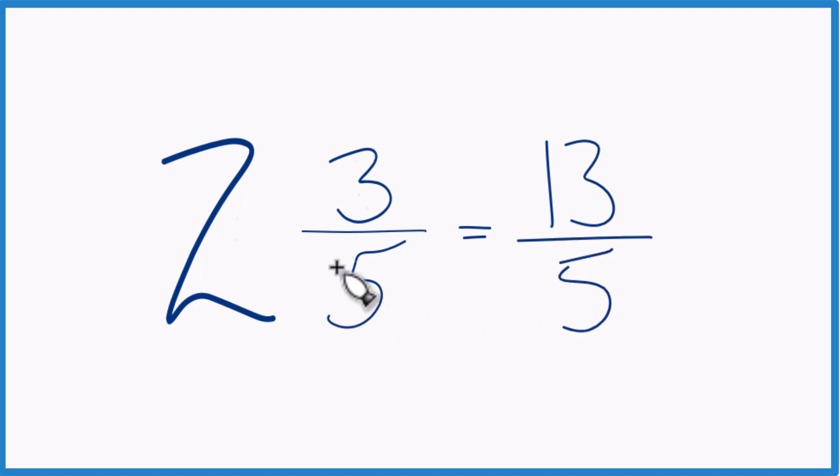So 2 and 3 fifths, the mixed number, equals the improper fraction 13 fifths. We say it's improper because the numerator is larger than the denominator.